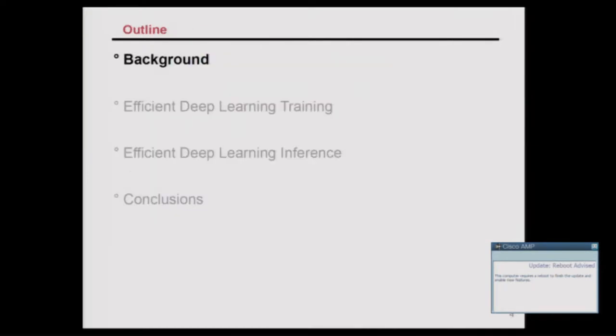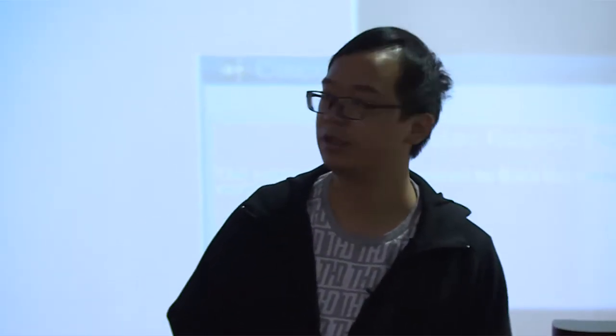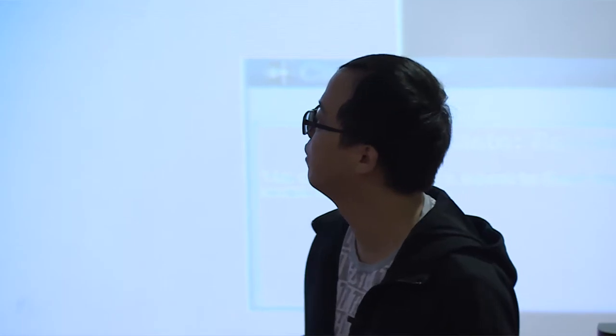First, I will give some background on what deep learning is and what we use randomized numerical linear algebra for in deep learning. I will show one case about training — large batch training doesn't work, and how can we make it work? Also, since current model sizes are more than 100 million parameters, how can we speed up inference time? Finally, I will give a conclusion.